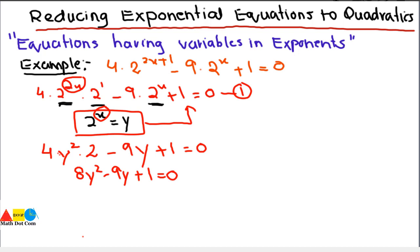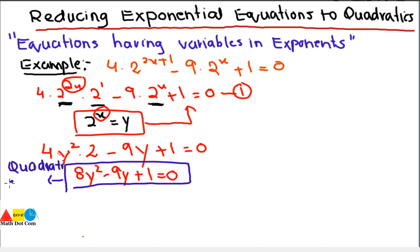This equation is in quadratic form since the highest power is 2. We can solve this quadratic equation by factorization, completing the square, or the quadratic formula. Using factorization: with a = 8 and c = 1, the product is 8, so the factors are 8 and 1.